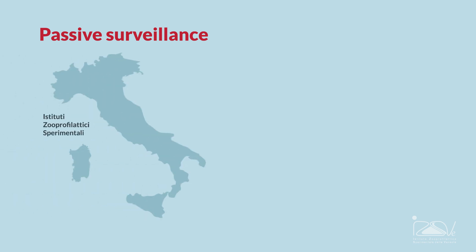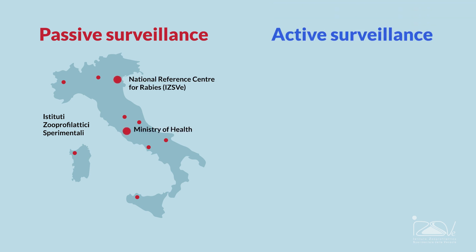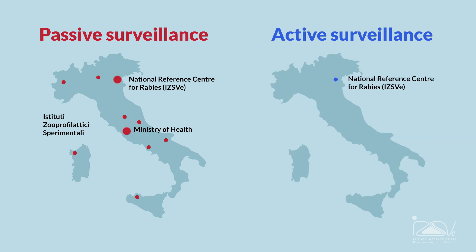Passive surveillance involves the network of the Italian Istituti Zooprofilattici Sperimentali, coordinated by the National Reference Center for Rabies and the Ministry of Health. Active surveillance is conducted solely by the National Reference Center for Rabies, based at the Istituto Zooprofilattico Sperimentale delle Venezie, under the close supervision of ISPRA — the Italian Institute for Environmental Protection and Research — and the Ministry of Health.